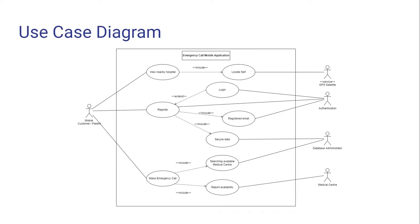This is the use case diagram of our emergency call mobile application. The mobile customer or patient will be having the view nearby hospital use case. The view nearby hospital includes the locate self use case, which the application will get the location of the mobile customer actor. The locate self use case is linked to the GPS satellite service.